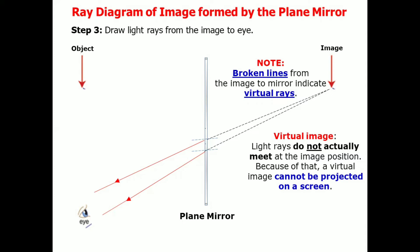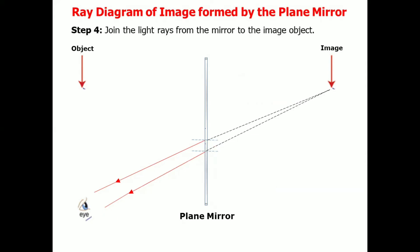Let's have the last step. Join the light rays from the mirror to the image object. And we do it by drawing these lines. And we have completed now the diagram. You have to remember that the blue line is what we call incident rays, while the red lines are what we call reflected rays.